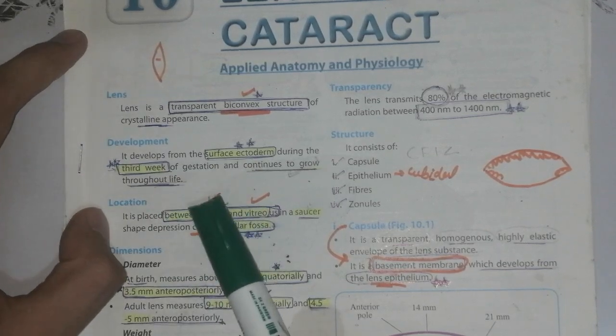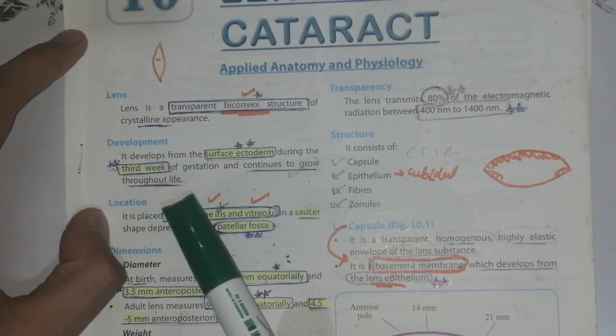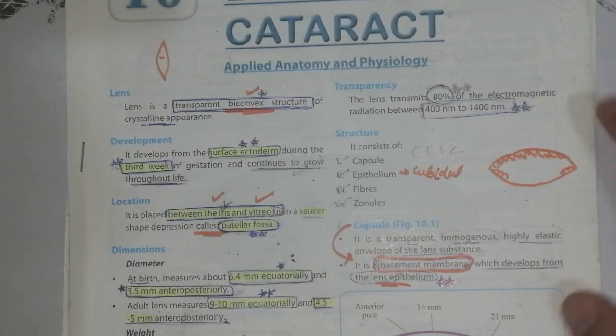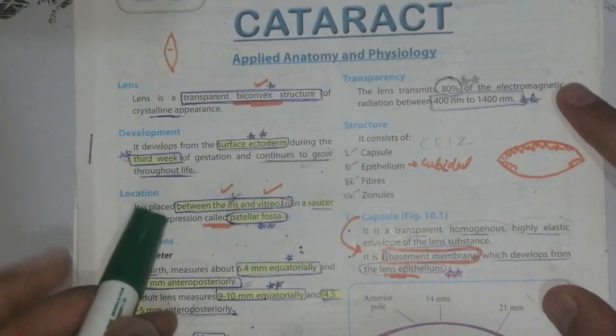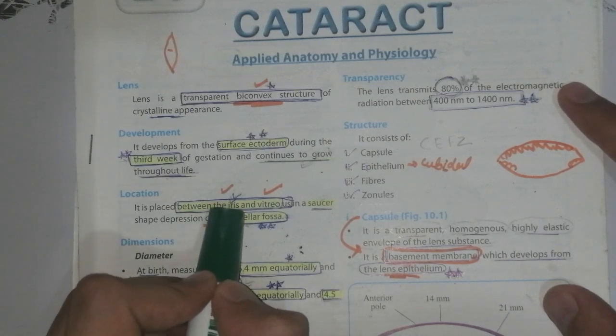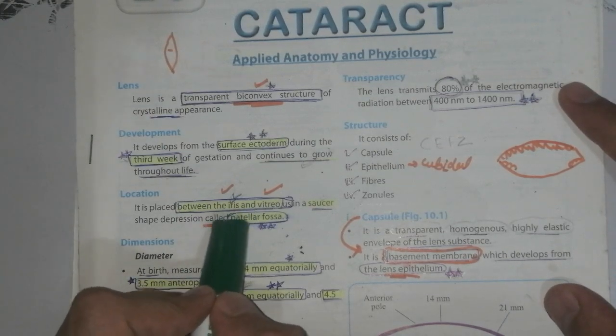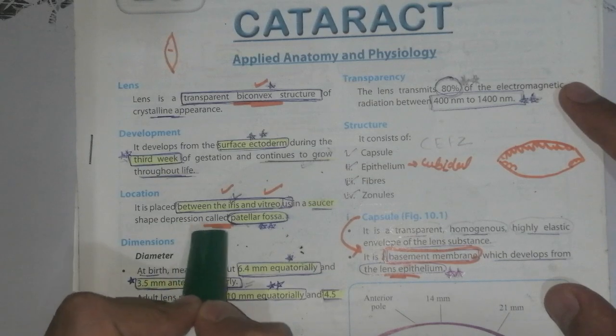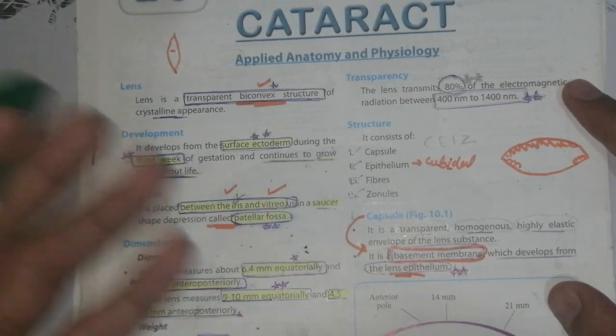What is the location of the lens? It is placed between the iris and vitreous in the saucer-shaped depression of the patellar fossa. This is basically a saucer shape.